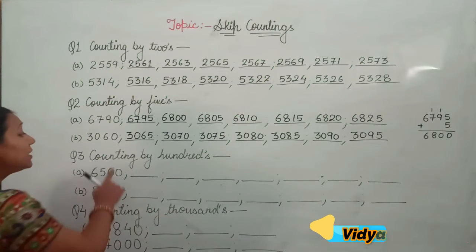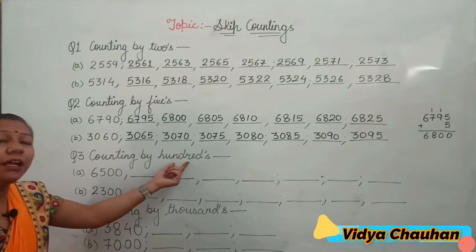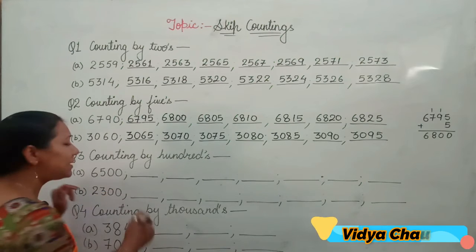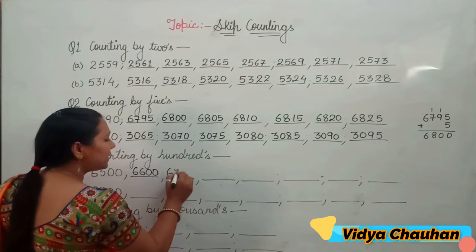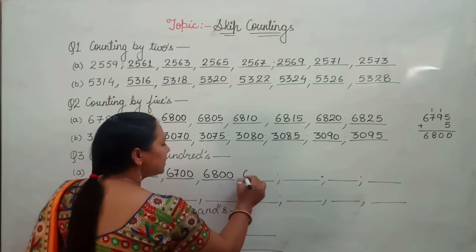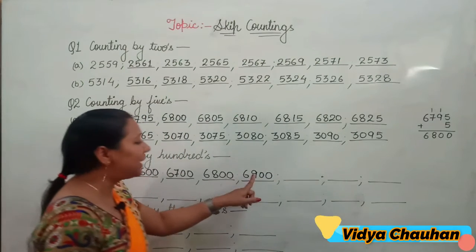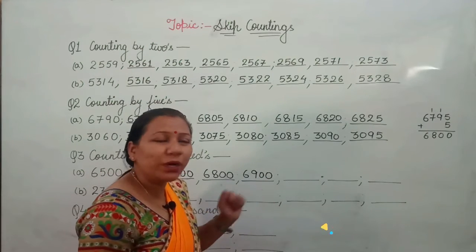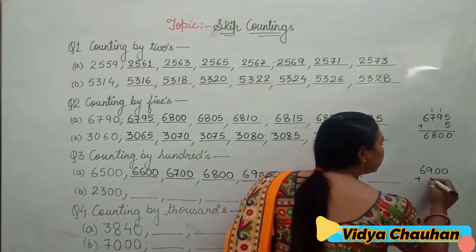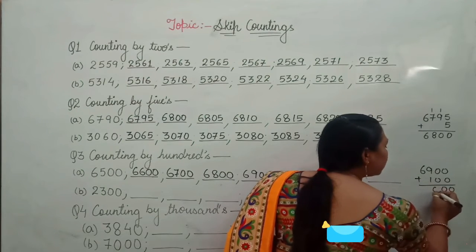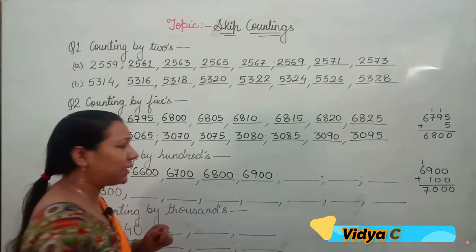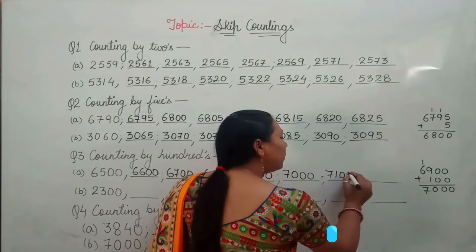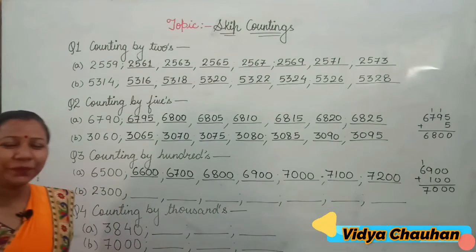Next is skip counting by 100, which means we add 100 to every number. Starting with 6500: adding 100 gives 6600, then 6700, 6800, 6900. When you add 100 to 6900 — doing it in your rough work: 0 plus 0 is 0, 9 plus 1 is 10, carry 1 — you get 7000. Then adding 100 again gives 7100, and then 7200.